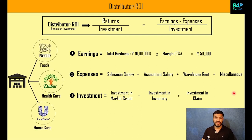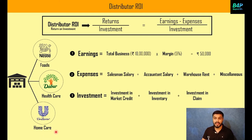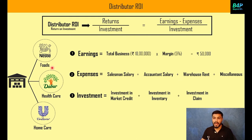Now we will jump into the Excel sheet to see a live example of how distributor ROI is calculated. Before that, let's take a realistic assumption: a distributor keeps stocks of 3 companies to increase earnings — Nestle Foods, Dabur Healthcare, and Hindustan Unilever home care. These are non-conflicting categories, so there's no conflict. We will assume we are calculating from Dabur's perspective, as an ASM of Dabur.